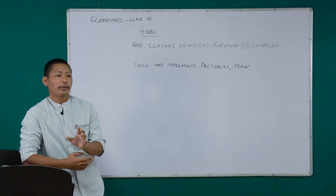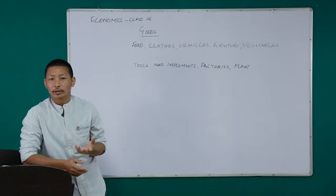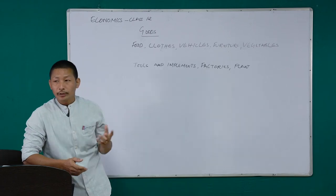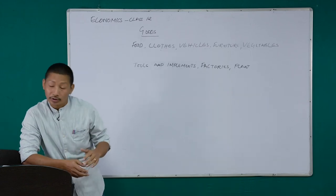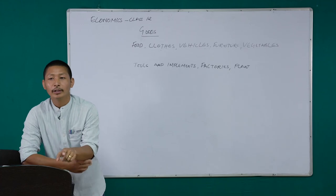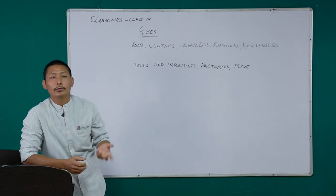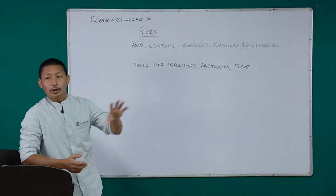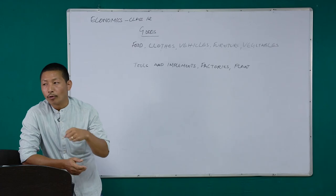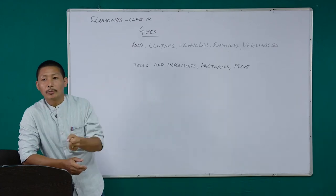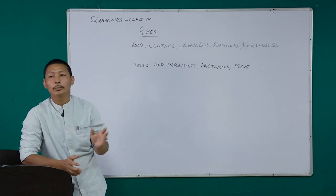Durable goods give us services over time. Consider vehicles — the kind of car your parents purchased 20 or 30 years back, we are still using it. Or furniture bought during your first or second birthday — we are still sitting on it. Tools and implements like a dao, a hammer, or implements used in construction are also used for a long period of time.